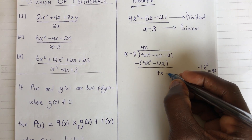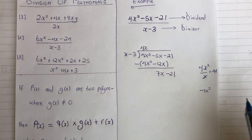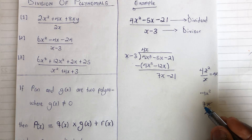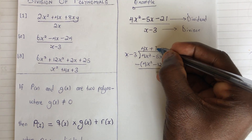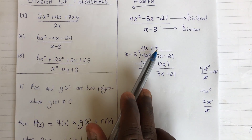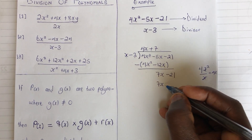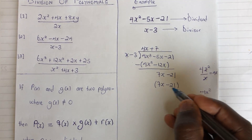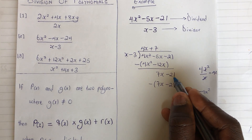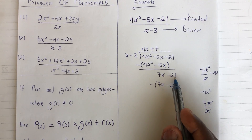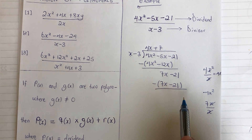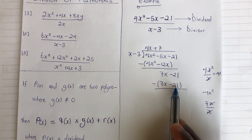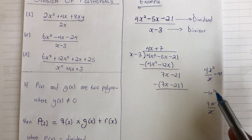We now have minus 21 carried down and start the division again. Take 7x and divide by x — the x cancels, leaving 7. Write plus 7 at the top. Use 7 to multiply each term in the divisor: 7 times x gives 7x, and 7 times 3 gives minus 21. Put this in brackets and subtract from 7x minus 21. Negative times 7x gives minus 7x; adding to 7x gives zero. Negative times negative 21 gives positive 21; adding to minus 21 gives zero. So we are done — the remainder is zero.